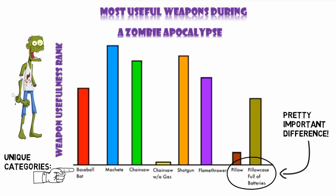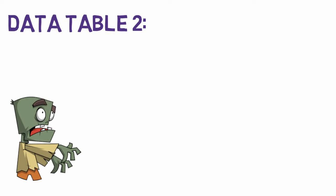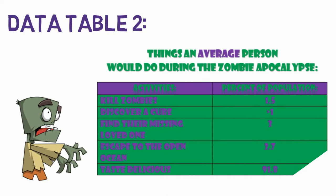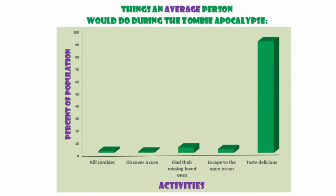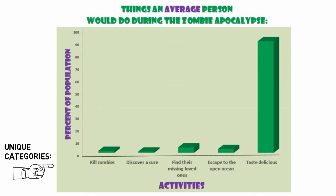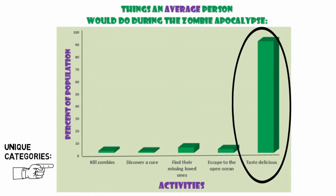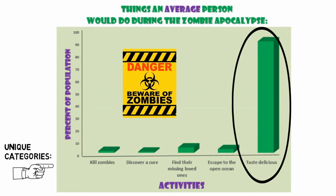Let's try a second one — data table two: things an average person would do during a zombie apocalypse. We have different activities and the percent of the population that would do each of the activities. Should the data be used to make a bar or line graph? The best graph choice is a bar graph, because the different activities each represent a unique category and they're compared against each other. Graphing this data also helps us easily see that most people would spend their time tasting delicious during a zombie apocalypse.